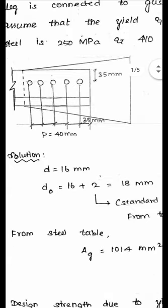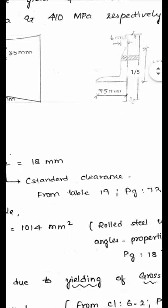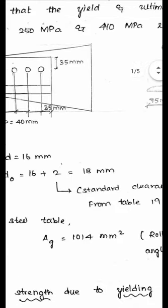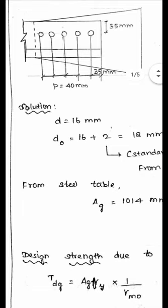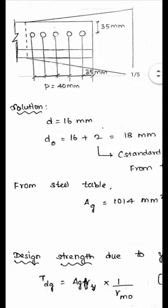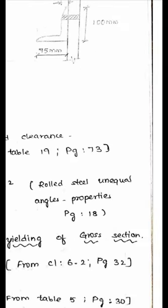The diameter of the bolt is 16 mm. Adding the standard clearance of 2 mm from Table 19, page 73, the diameter of the hole is 18 mm. From the steel table, the cross-sectional area of this unequal angle section 100 by 75 by 6 is 1014 mm².